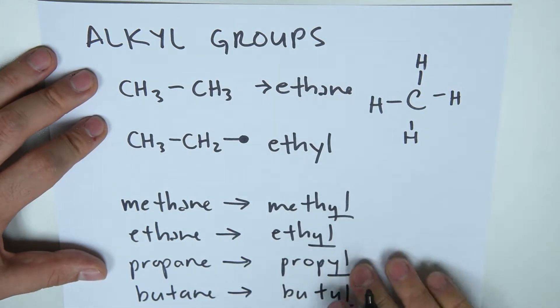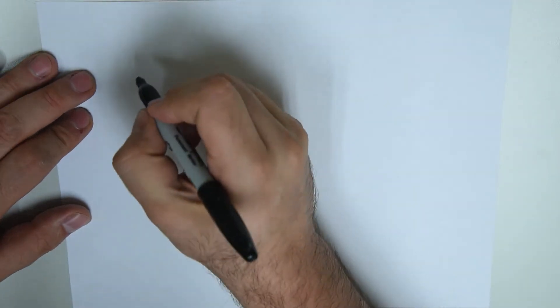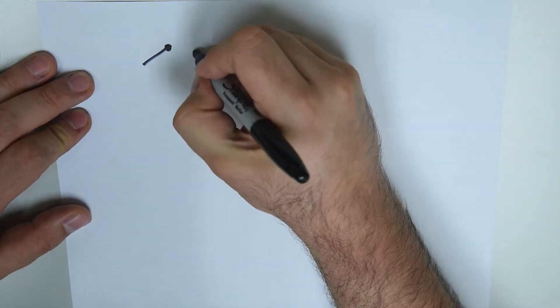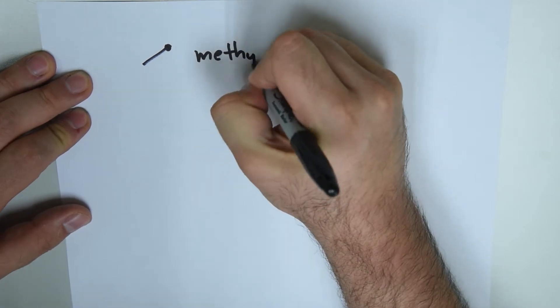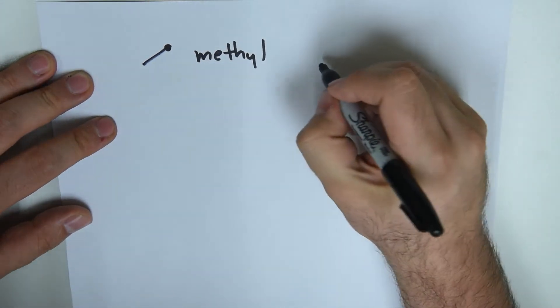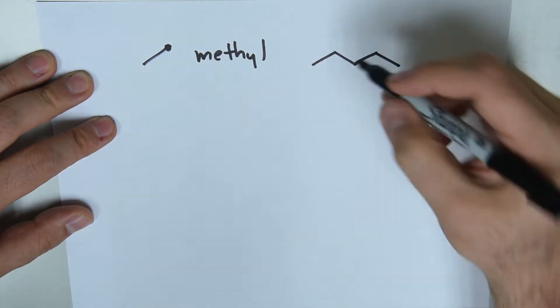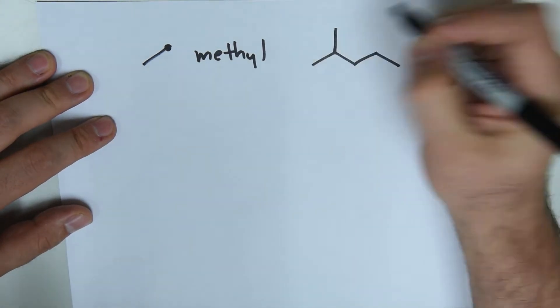How can we turn this into skeletal formulas or line angle formulas depending on the text you're looking at? Let's say we have one carbon and its bonding arm. So this is methyl. An example would be one, two, three, four, five. This is pentane, and then we have another little arm attached.